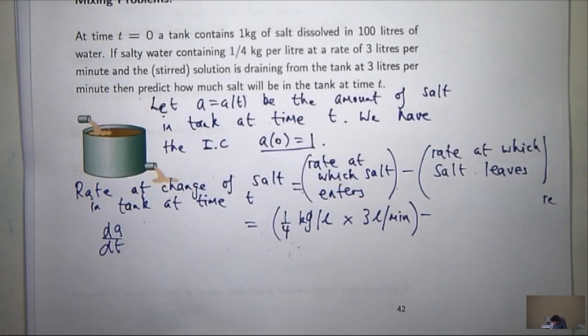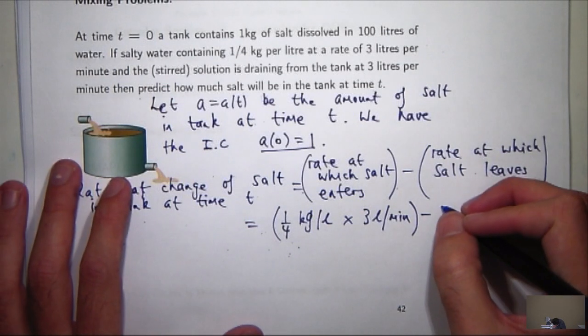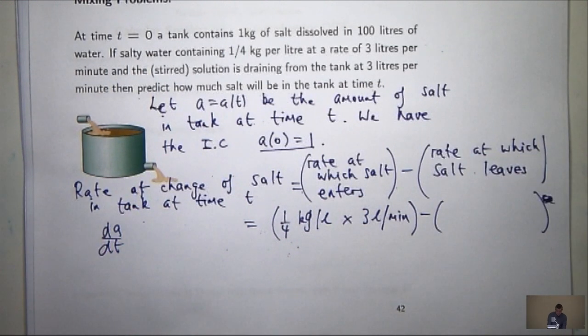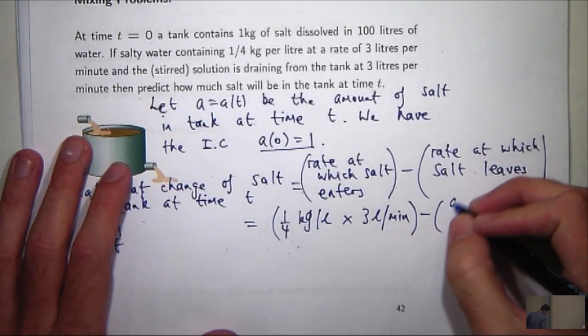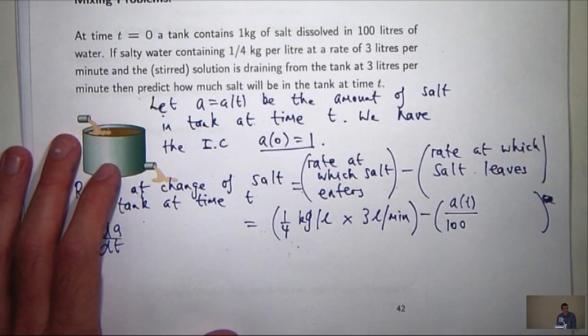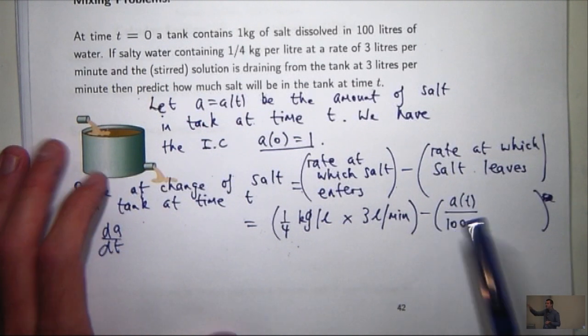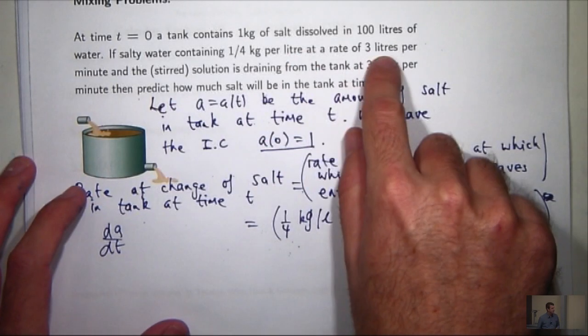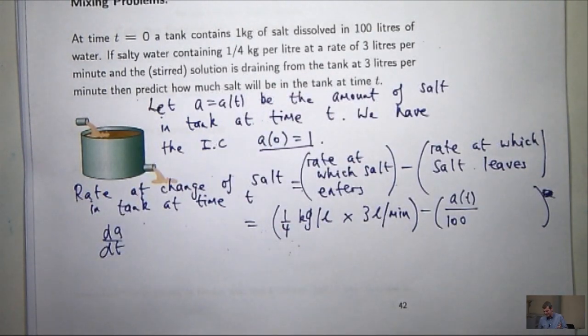Now we need to worry about this. This is a slightly harder bit. So how would we determine this? Well, you can get this by multiplying the concentration of salt by the outflow rate. So if A is the amount of salt at time t, the concentration is given by the amount of salt divided by the amount of liquid in the tank. So because the inflow and outflow are the same, we've got three litres going in and three litres coming out, the tank is always going to contain 100 litres.